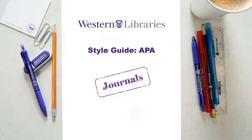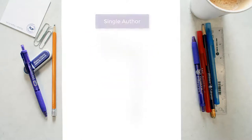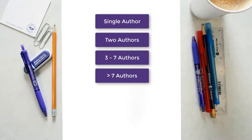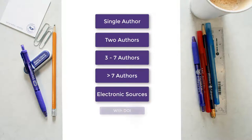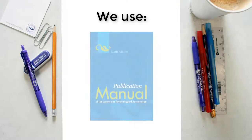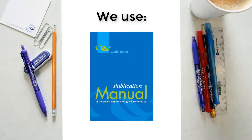In this tutorial we'll go through the most important things to remember when citing journals in APA format, including single author, two authors, three to seven authors, over seven authors, and electronic sources with DOI and without DOI. Please note all information mentioned is based on the 6th edition of the APA Style Guide.